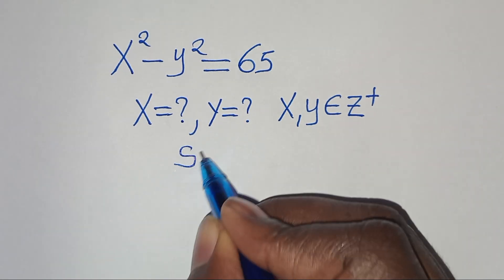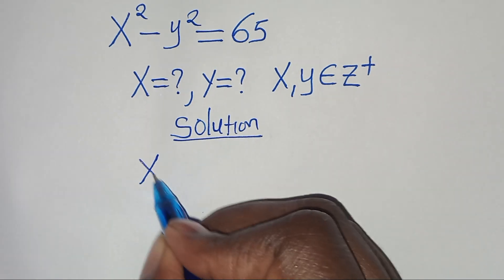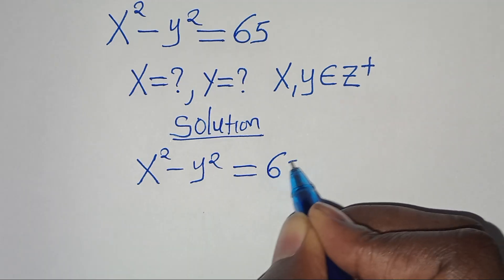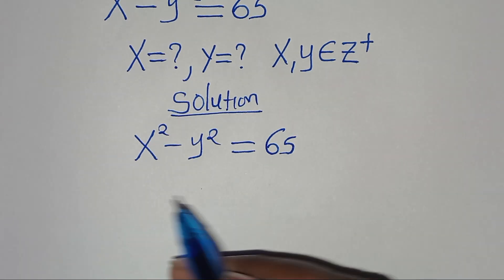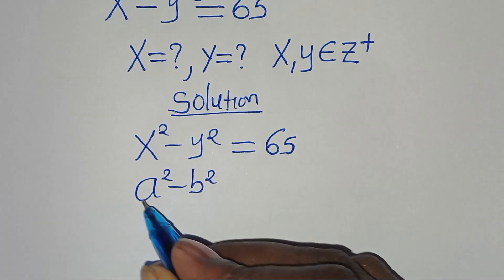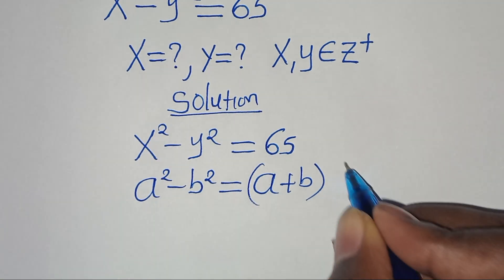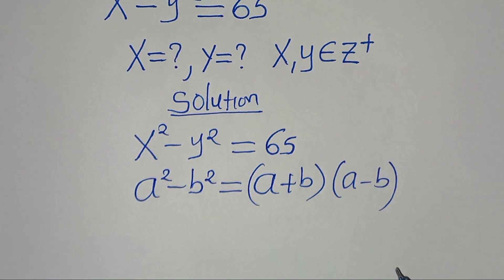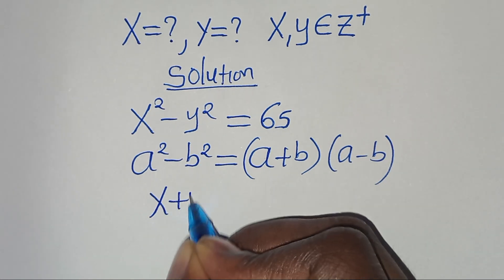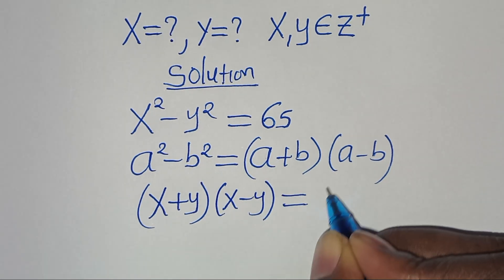Let's provide a solution. We have x squared minus y squared equals 65. This equation is in the form of a squared minus b squared, which is the difference of two perfect squares that we can express as (a + b) multiplied by (a - b). So we can express x squared minus y squared as (x + y) multiplied by (x - y), and this is equal to 65.